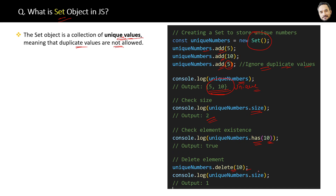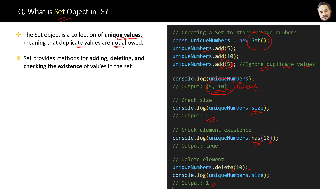Basically, this Set has its own methods like arrays have their own methods — the functionality is a bit similar but the names of the methods are slightly different. A Set provides methods for adding, deleting, and checking the existence of values in the Set.